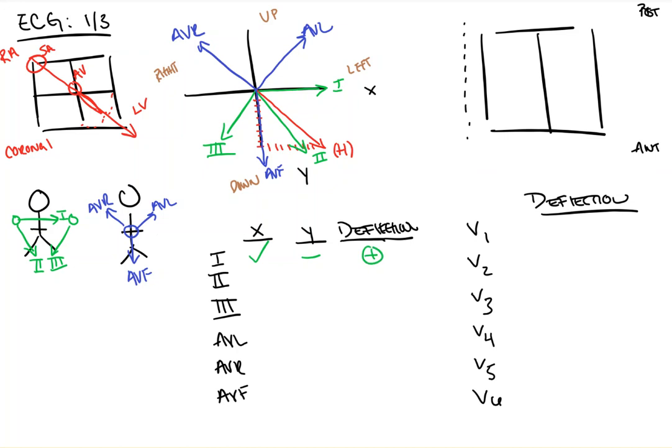Lead two, x of lead two goes to the left, so they're the same as the heart. And y goes down, same as the heart. So you should have a positive deflection in lead two.